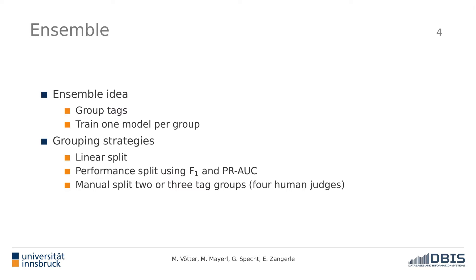To be able to group those tags, we came up with the following grouping strategies. One is a linear split, where we simply split the tags into equal-size groups based on alphabetical order. The second is a performance split, where we use an ordering determined by either F1 score or PR-AOC score, and again use similar-size groups.